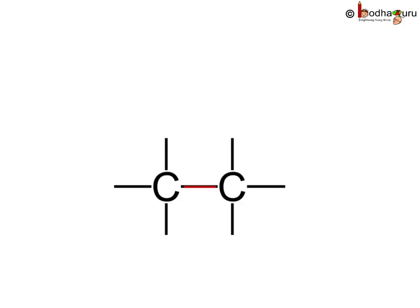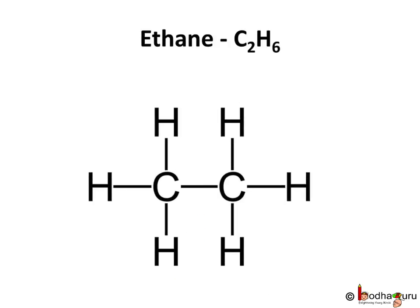Now, 2 carbon atoms can form a short chain, and each carbon needs another 3 electrons to achieve 8 valence electrons. So we see each carbon atom forms 3 covalent bonds with 3 hydrogen atoms, and this compound is called ethane, having a molecular formula C2H6.